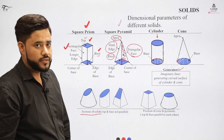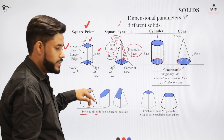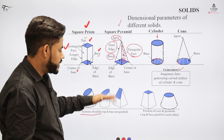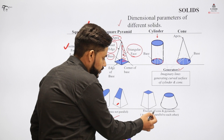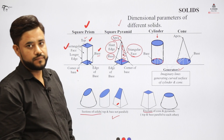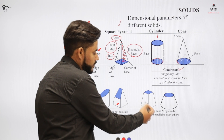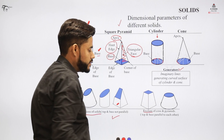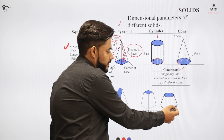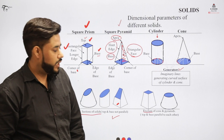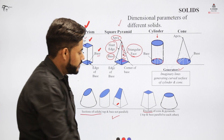You will also come across the concept of sections of solids. If we have a cone and cut it, we get a section. The same applies to a cylinder or a square pyramid. A cone or pyramid, when cut by a plane parallel to the base, produces a shape called a frustrum. For example, if we cut a square pyramid with a plane parallel to its base, the resulting shape is called the frustrum of the pyramid. Similarly, cutting a cone with a plane parallel to its base gives the frustrum of the cone.